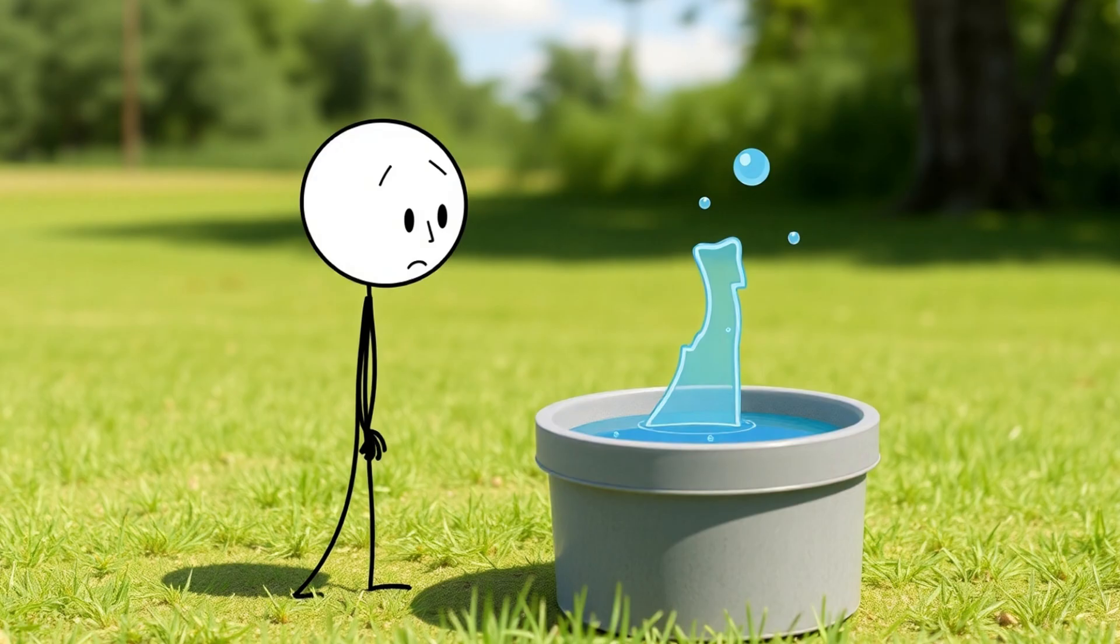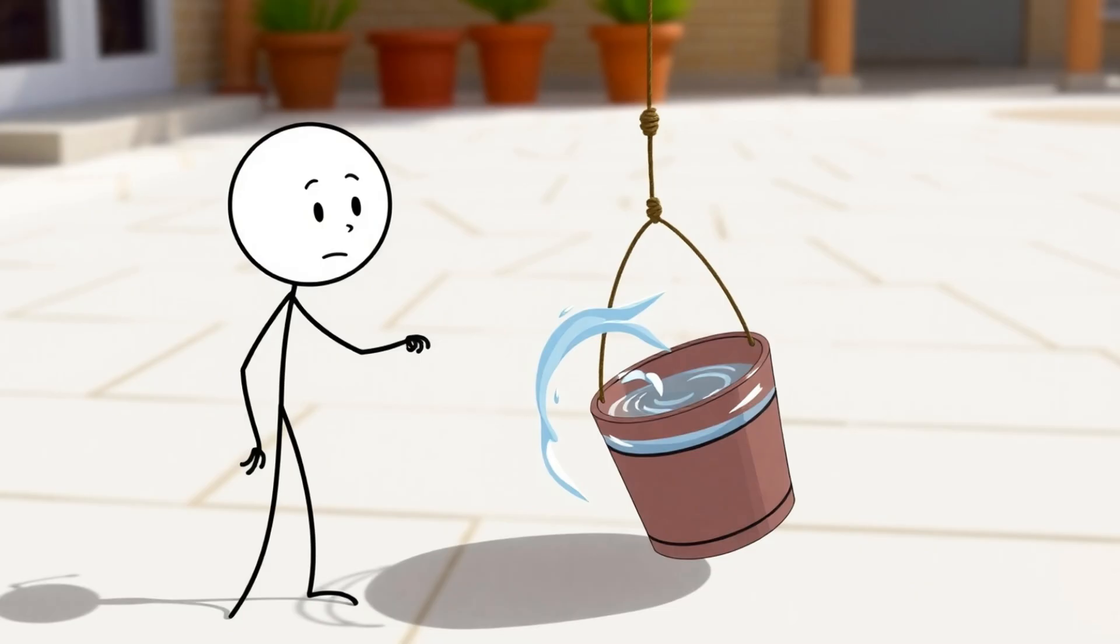What exactly is the water rotating relative to? If it's just the bucket, that fails, because when the bucket and water spin together, they're at rest relative to each other. Yet the water is still curved.